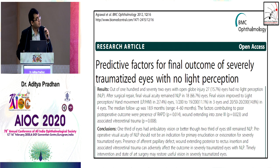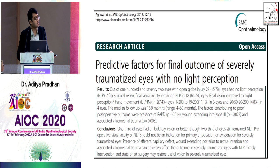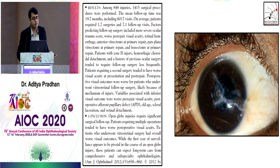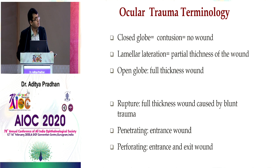I have no financial interest in this topic. Looking at this article on factors for final outcome of severely traumatized eyes with no perception of light: one third of eyes had ambulatory vision even after basic sclerocorneal repair, but two thirds remained without perception of light. So even in very severe injury, corneal repair can give ambulatory vision in 33% of cases — do not declare such cases as hopeless.